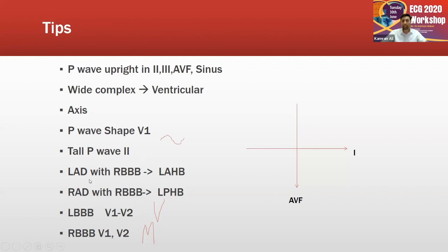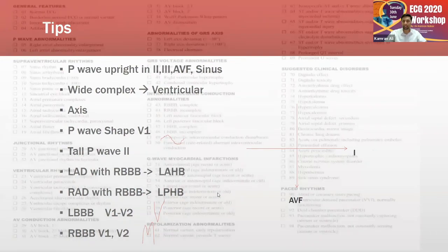For right bundle branch block, in lead V1 you will see two peaks — an RSR' pattern — with a wide complex, which denotes RBBB. It is normally associated with a broad notched S wave in lead I, aVL, or the lateral leads V5 and V6. The LBBB pattern shows a large wide complex in V1. If RBBB is associated with left axis deviation, we call this a bifascicular block with left anterior hemiblock. If RBBB is associated with right axis deviation, it is a bifascicular block with left posterior hemiblock.